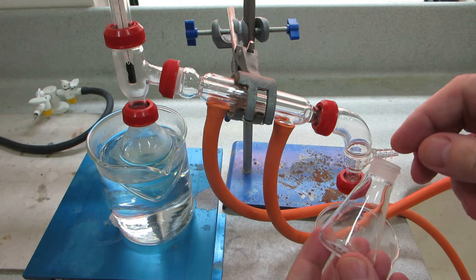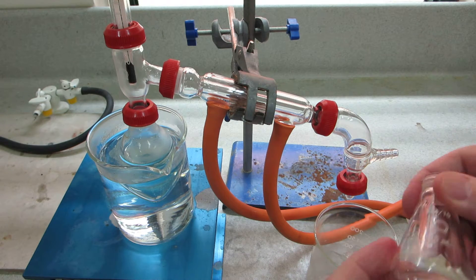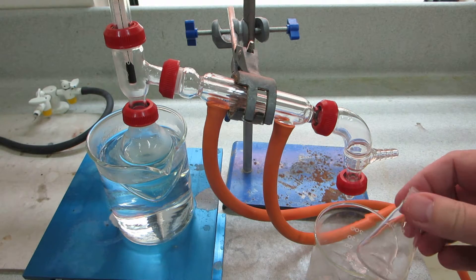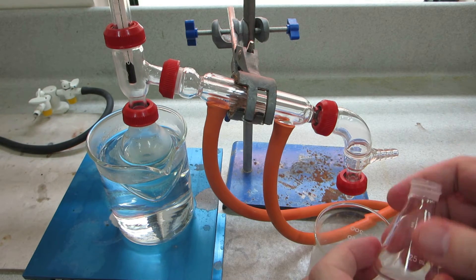We're going to collect any product that's produced in this conical flask here. And that's going to be surrounded by ice. We're expecting to get ethanol, which has a very low boiling point, around 20 degrees centigrade.